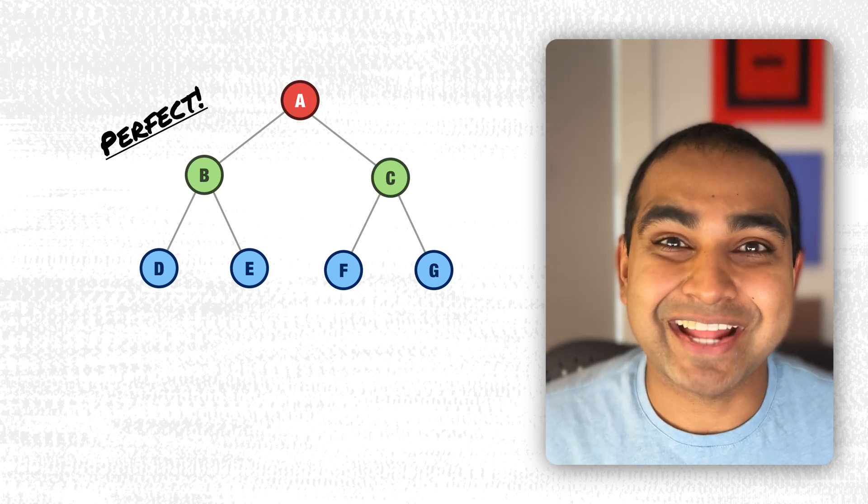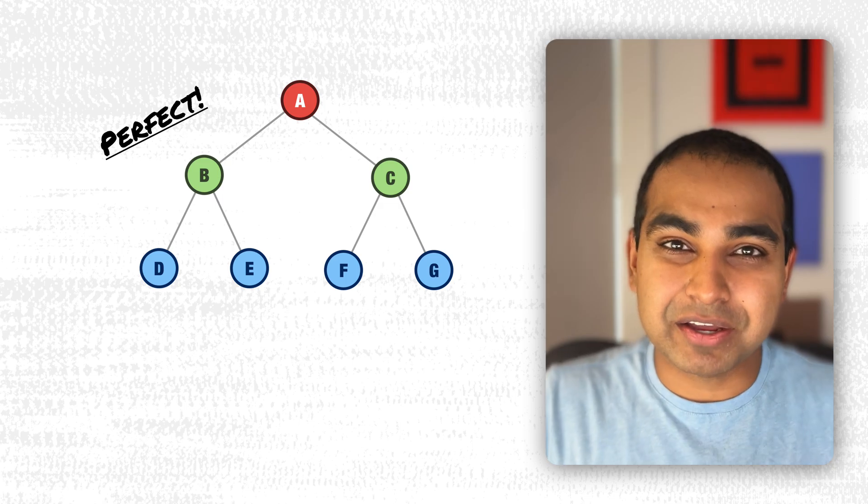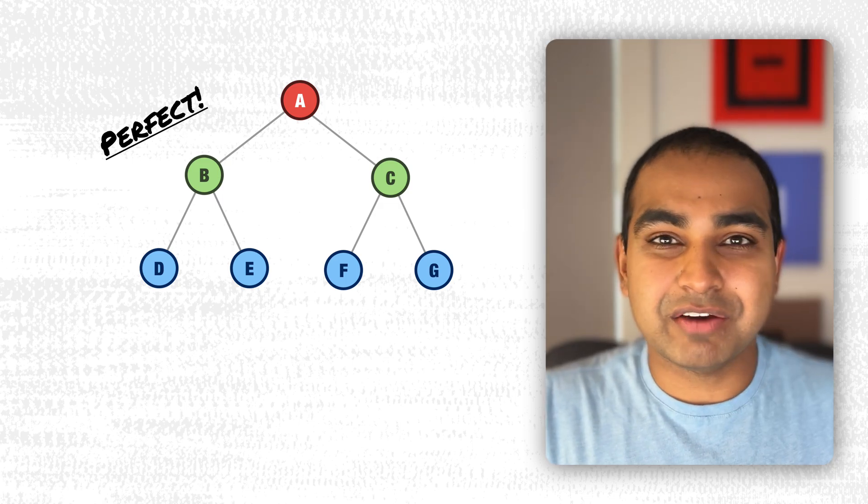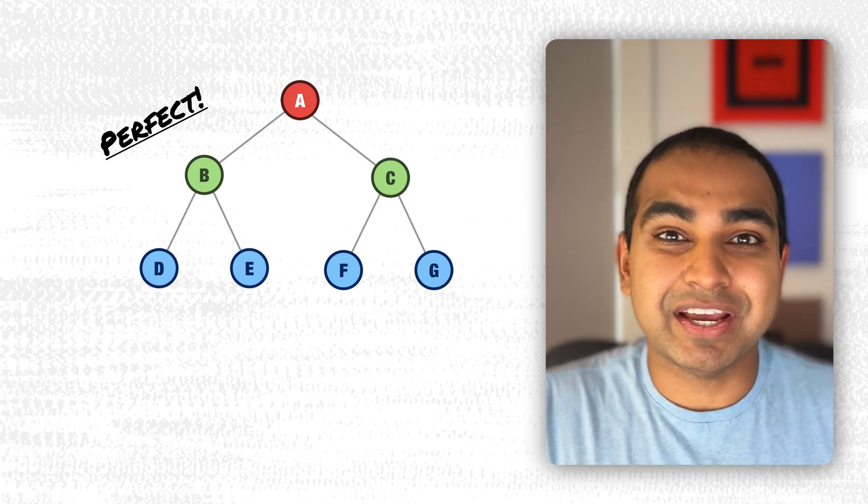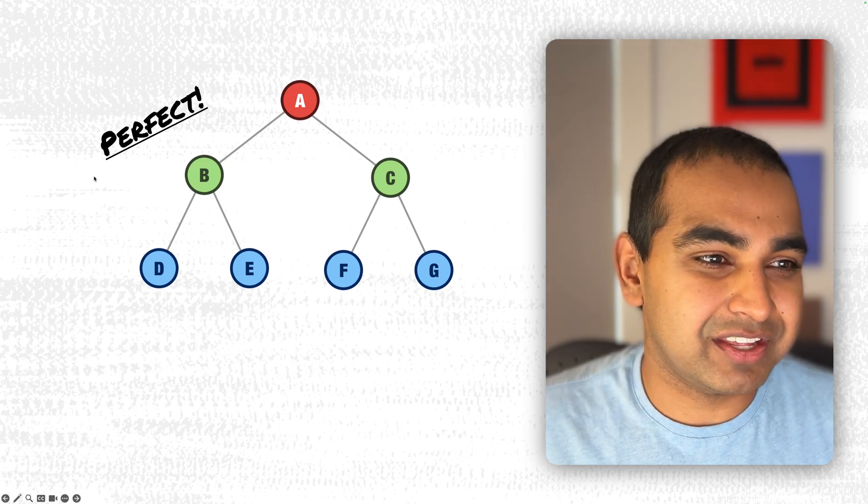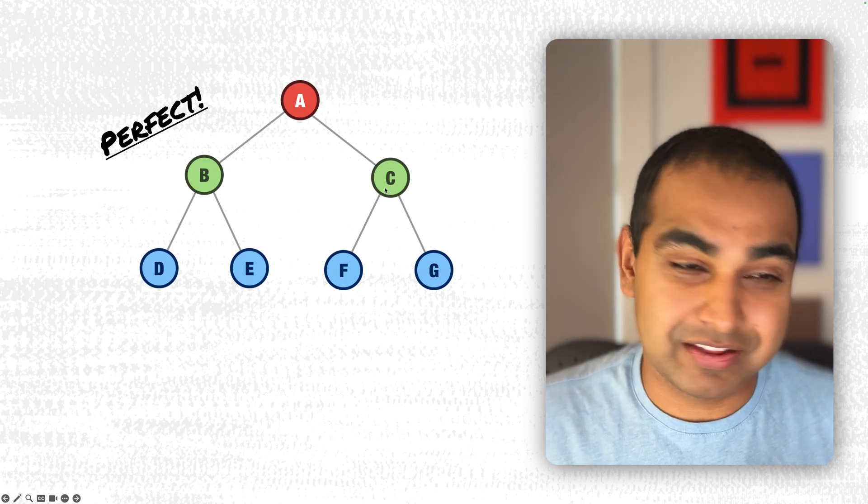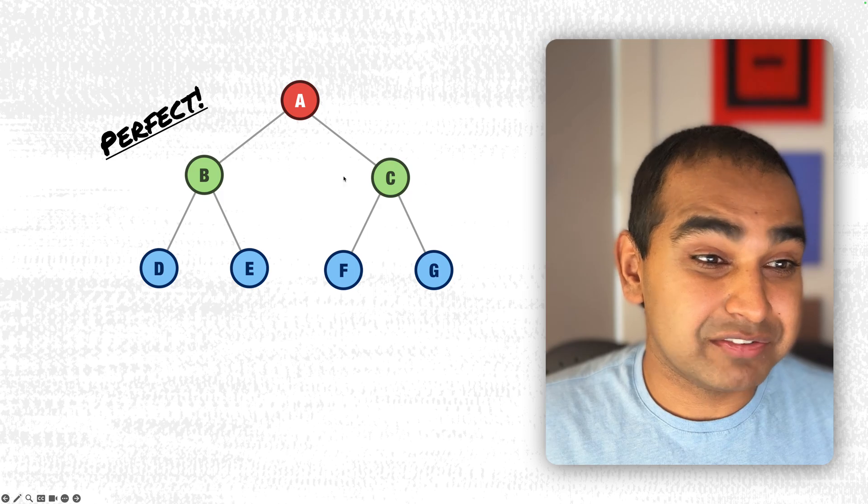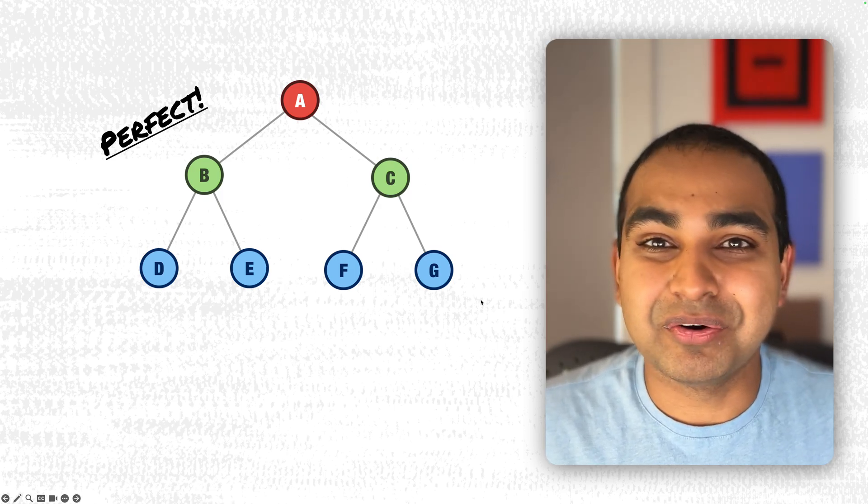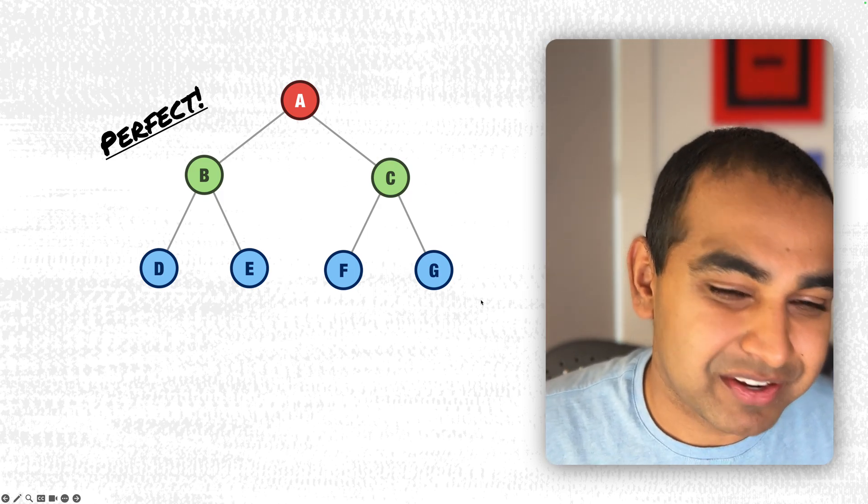...all leaf nodes are also at the same level. So you won't have any situations where you have one particular node having additional layers of children. In this case, you can see that every node has an appropriate number of two children and each of them have two children of their own and no awkwardness or unbalancedness in how they're represented.